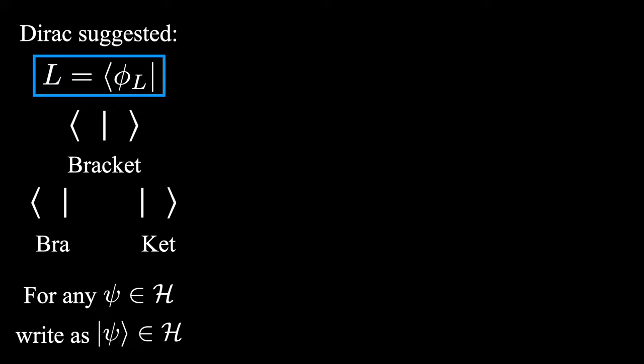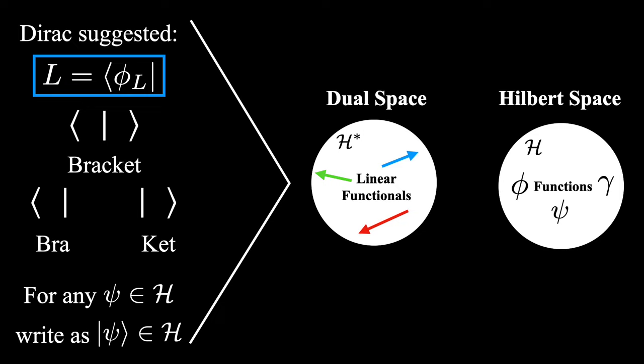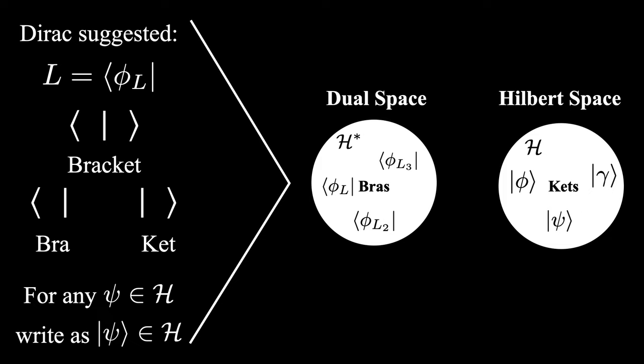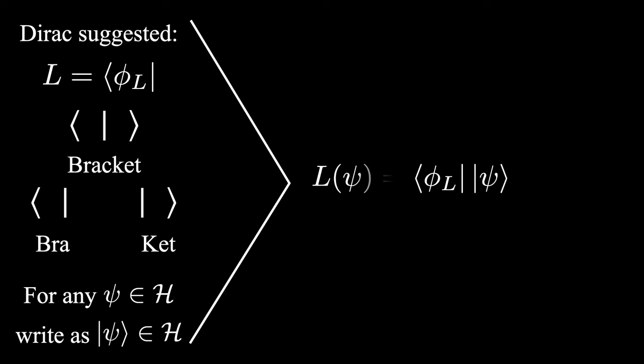So what this notation does now is that it reconceptualizes our picture of the Hilbert space and its dual space. It changes the picture of a Hilbert space with elements that are all functions and a dual space of linear functionals to an equivalent yet alternative picture where the elements of the Hilbert space are now kets and the elements of the associated dual space are bras. So in this new picture, we can now select a bra and apply it to a ket. And this is the exact same thing as applying a linear functional to the function in the original Hilbert space. And it is also the same thing as taking the inner product between phi sub L and psi.